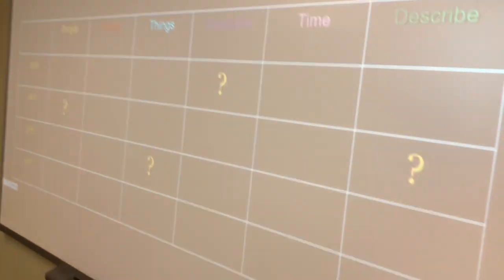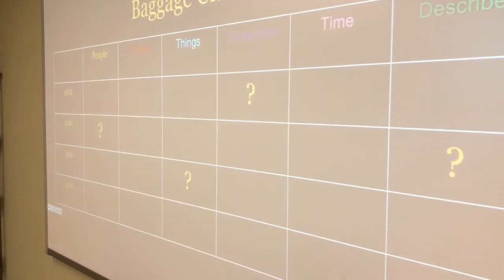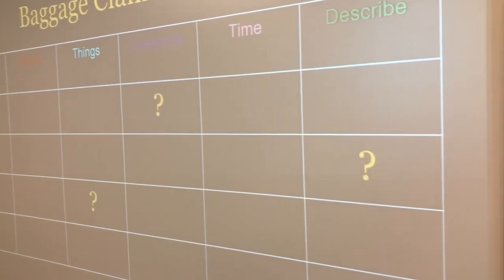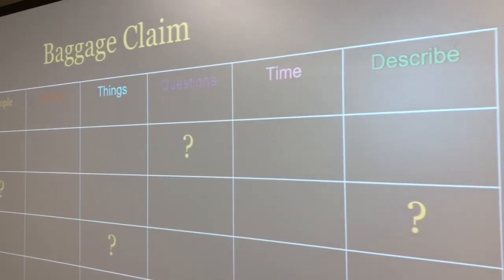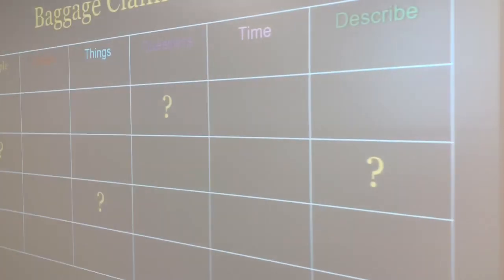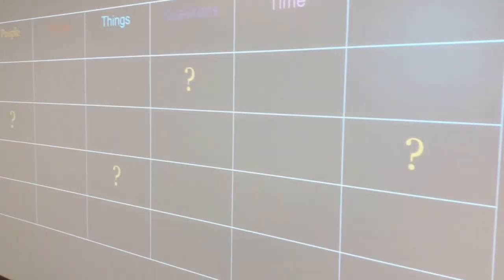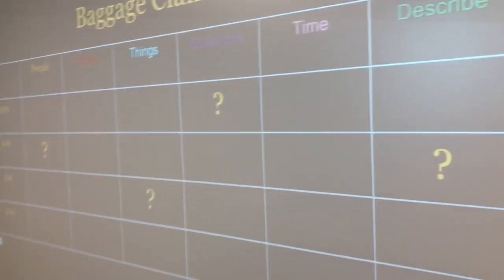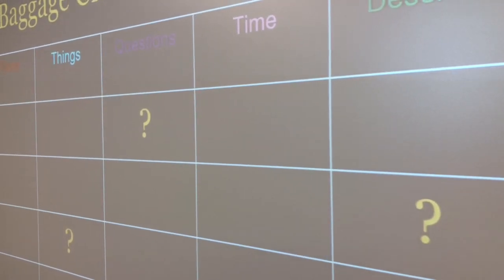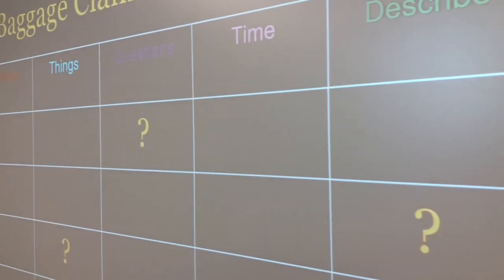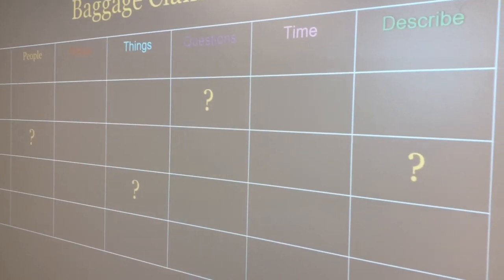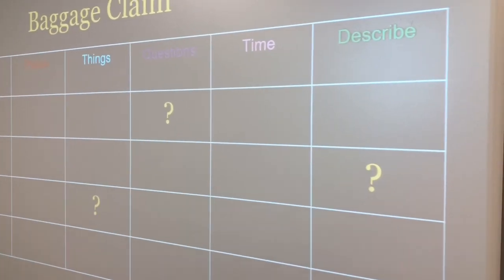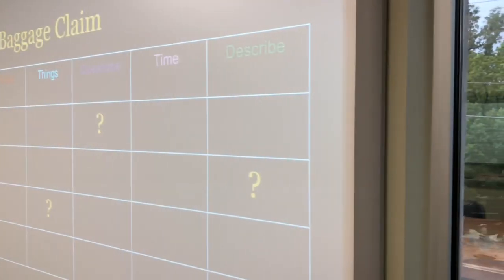This is going to be our baggage claim game. I'll give the people sitting at these tables some cards. They will fill out things that belong in certain areas, and then I will randomly place them. Going around the table, we have to guess whose baggage belongs to who. If they land on the money spots, they can ask anybody at the table any question they want. I picked 'Every Little Step I Take' by Bobby Brown — because no matter where you go, you have to take your baggage with you.